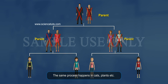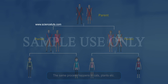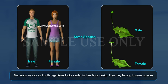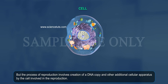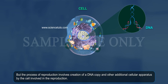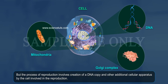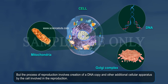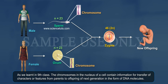The same process happens in cats, plants, etc. How can we say that two individual organisms belong to the same species? Generally, if both organisms look similar in their body design, then they belong to the same species. But the process of reproduction involves the creation of a DNA copy and other additional cellular apparatus by the cell involved in reproduction.